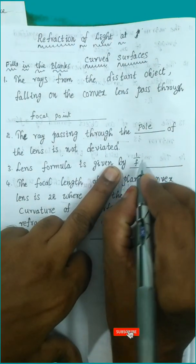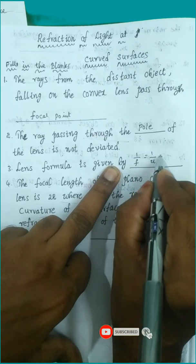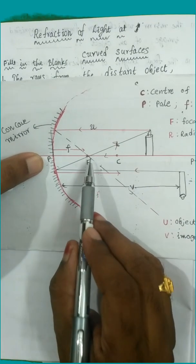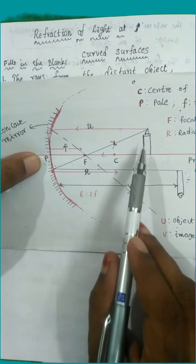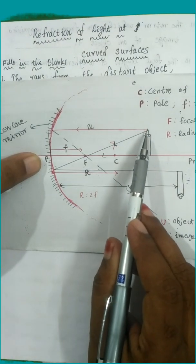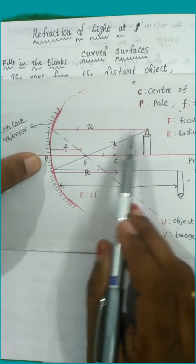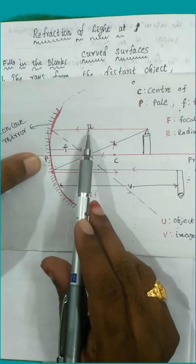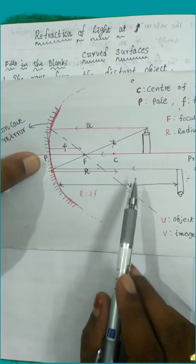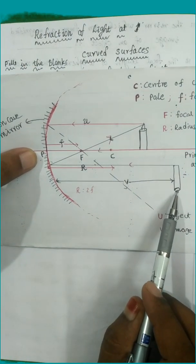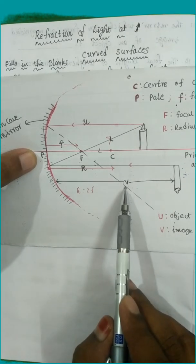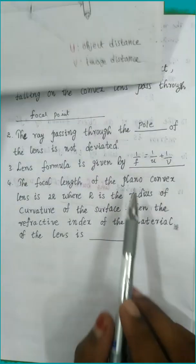The lens formula is: 1/f = 1/u + 1/v. Here, f is the focal length — the distance between the focal point and the pole. u is the object distance, which is the distance from the object to the pole. v is the image distance, the distance from the pole to the image.